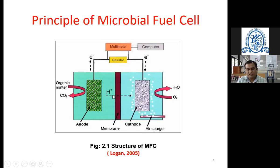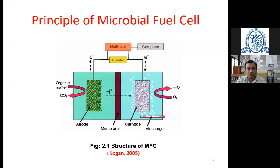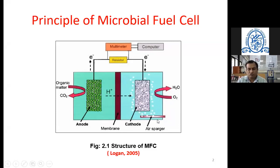After H⁺ ions reach the cathode chamber, if we provide an air sparger — meaning we provide air and indirectly oxygen in the cathode chamber — the dissolved oxygen reacts with the H⁺ ion concentration and creates fresh molecules of water. This is another advantage of the microbial fuel cell: in the cathode chamber, we can prepare fresh molecules of water with the help of H⁺ ions and the air supply via the air sparger.